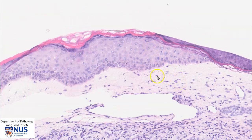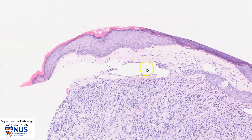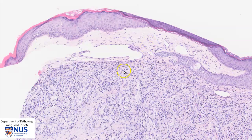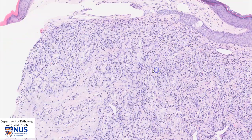Deep to this is the dermis, which is usually composed of collagen as well as blood vessels, and the dermis is usually relatively hypocellular. As we move deeper, we can see that this whole area appears much more cellular, and this is abnormal.